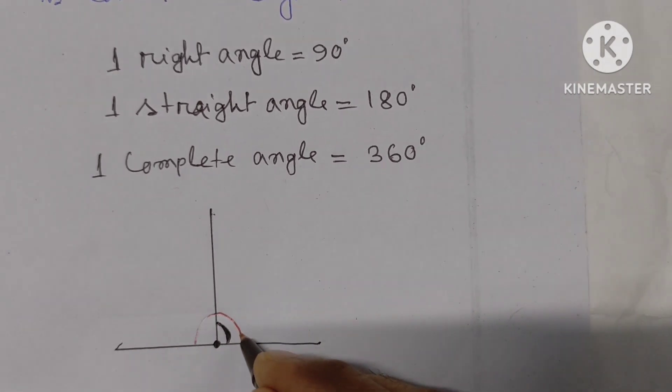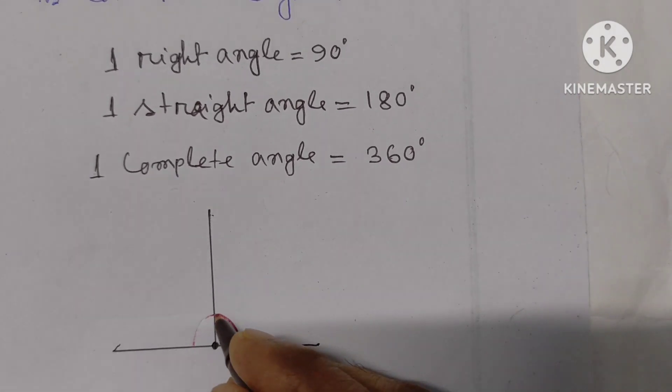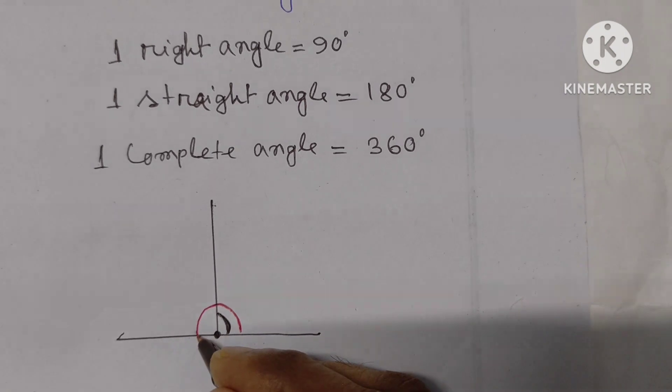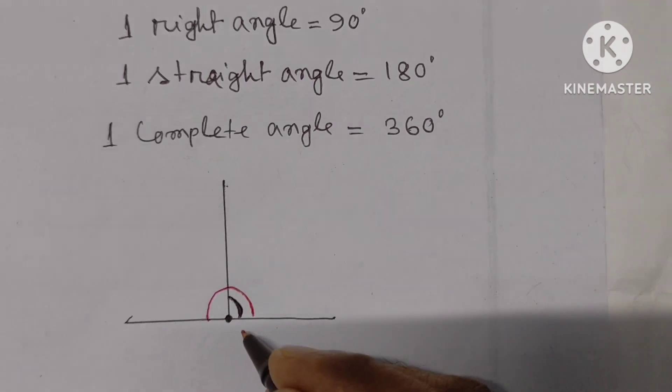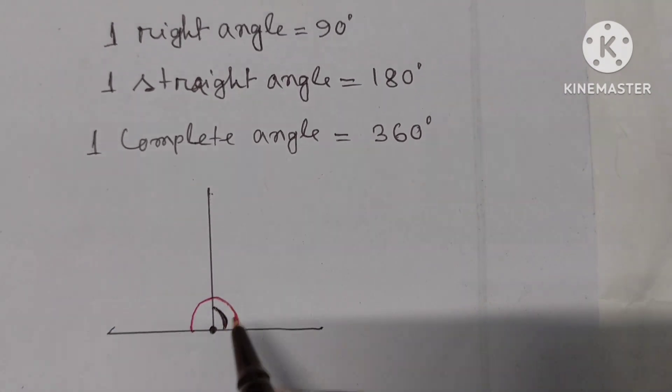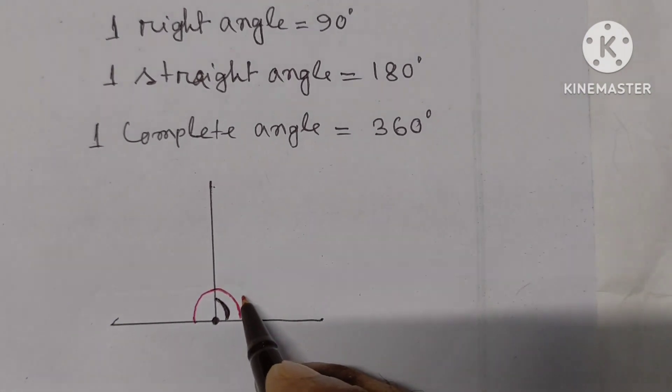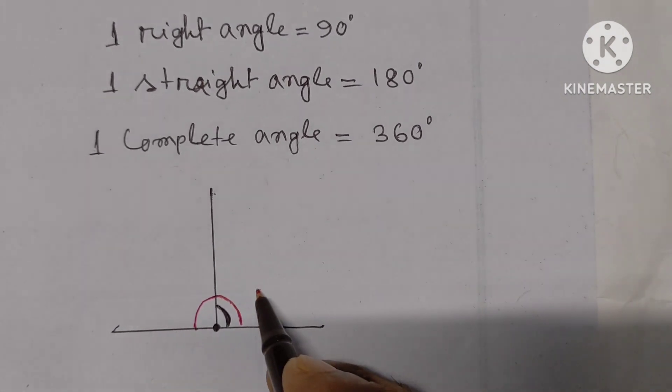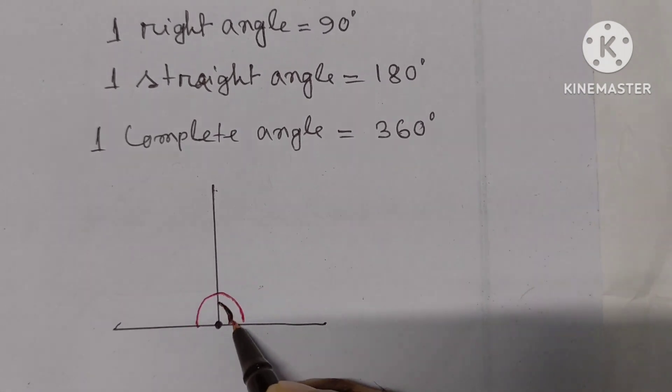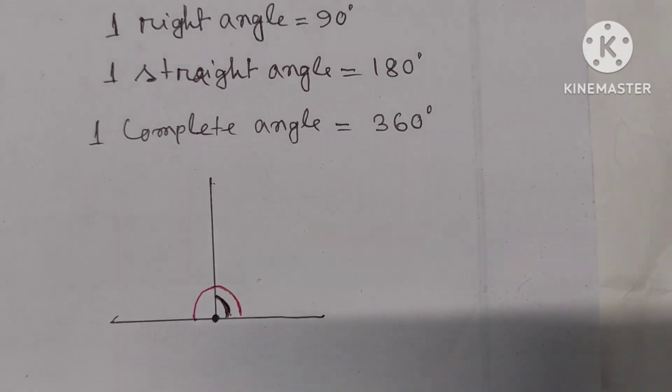One complete angle is 180 degrees. This one is a straight angle and this one is a right angle.